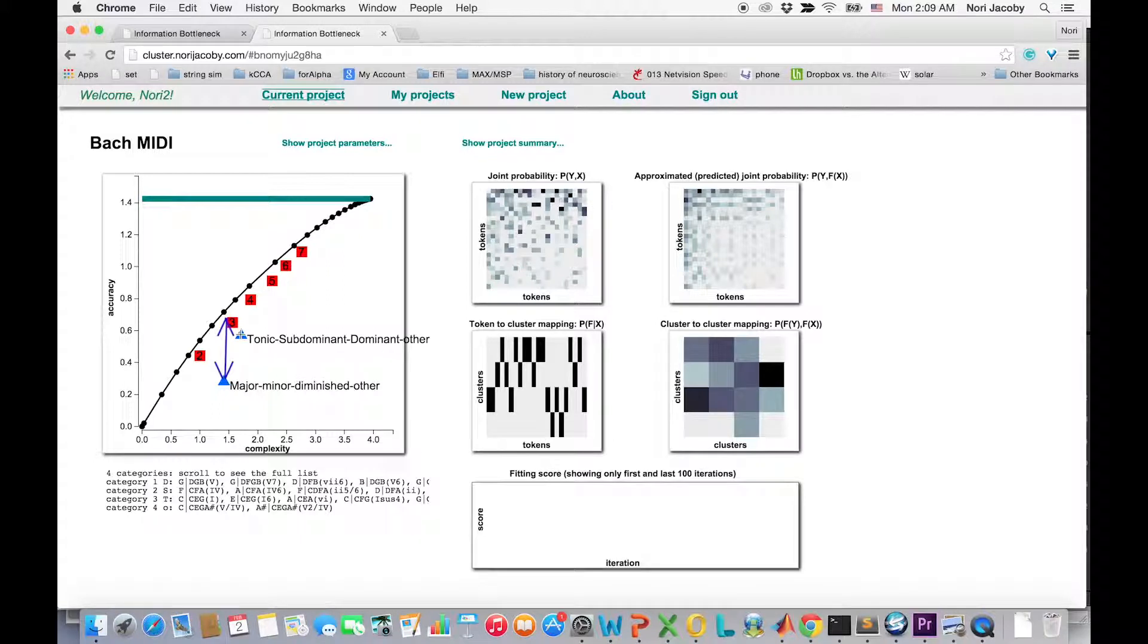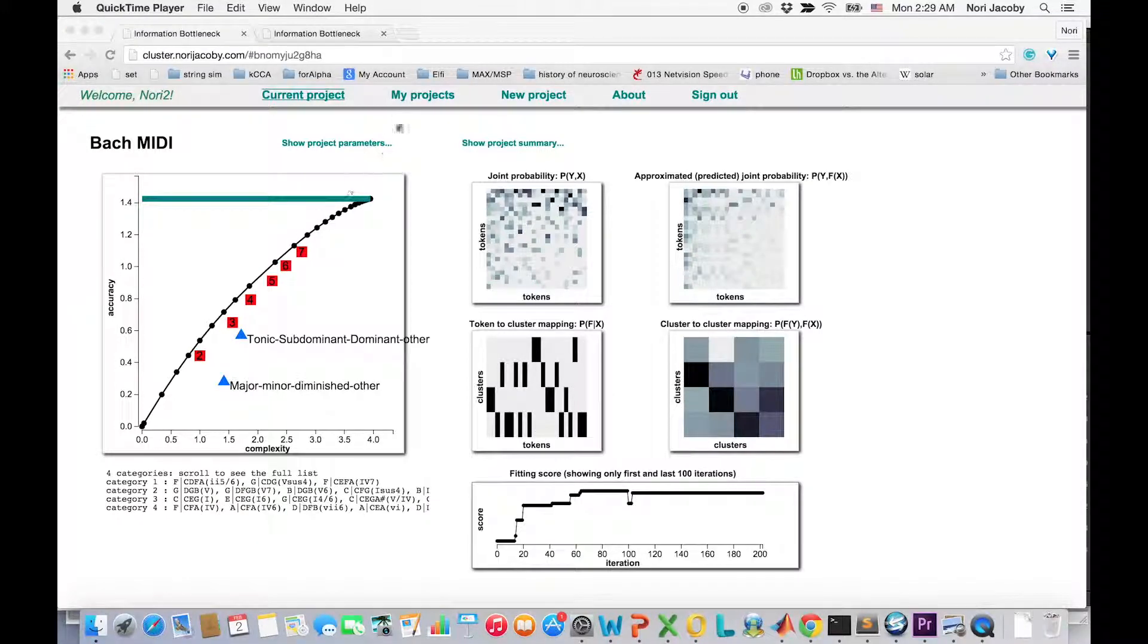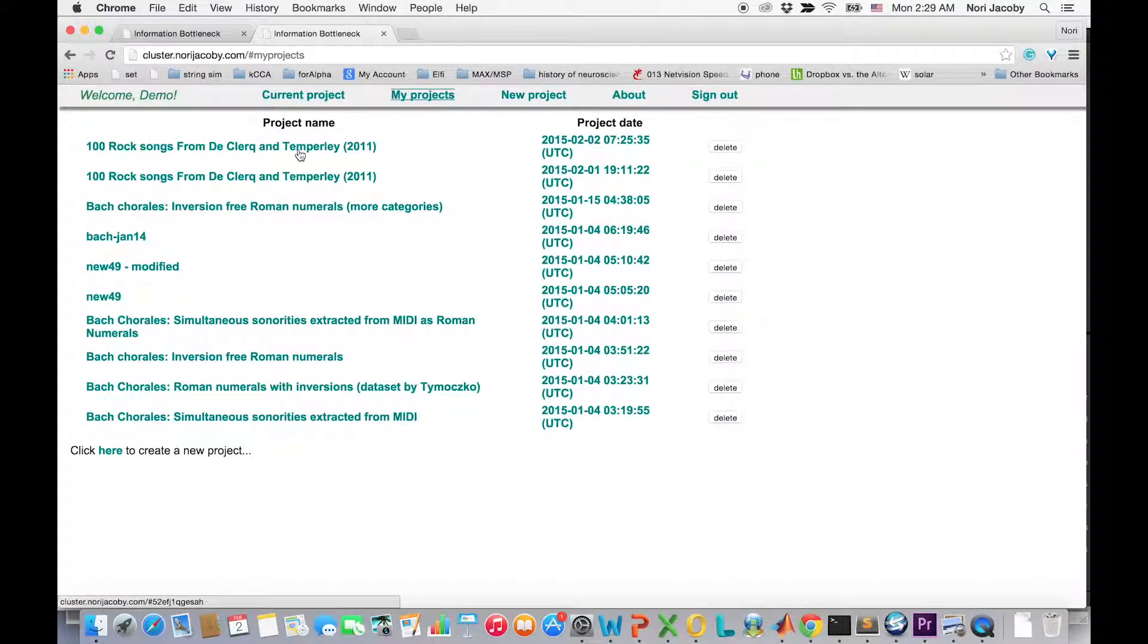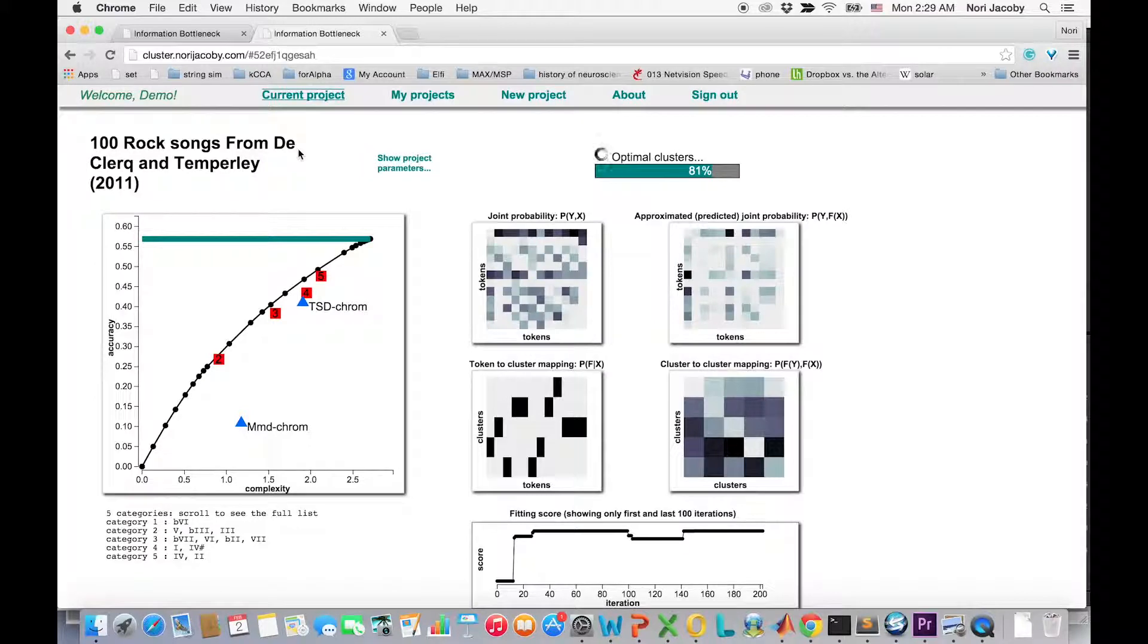And again, categorization to major, minor, and diminished performs suboptimally. Remarkably, this is also true for a corpus with a very different source. This is a corpus of 100 rock songs compiled by de Clercq and Temperley 2011.